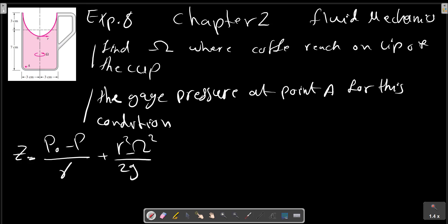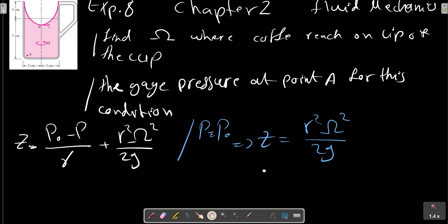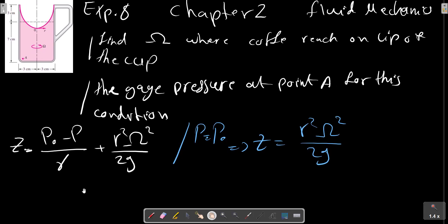So at P equals to P0 we are going to calculate Z equals to R squared Omega squared on 2G. So we are going to calculate Omega which Z equals to equal or greater than 3 centimeters.